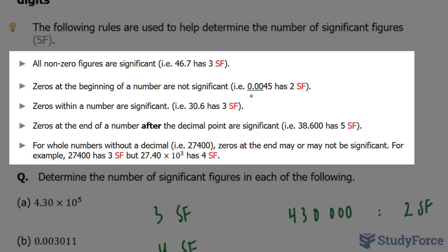In the number here, we have 0.0045. And the rule says that zeros at the beginning of the number are not significant.